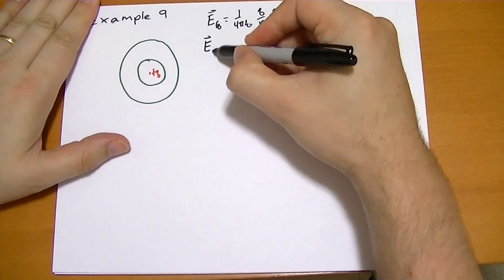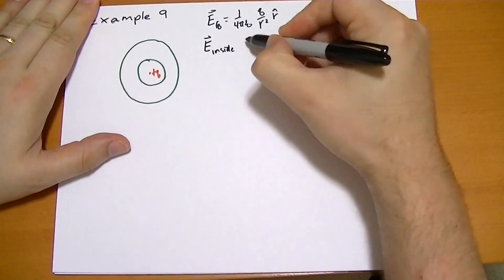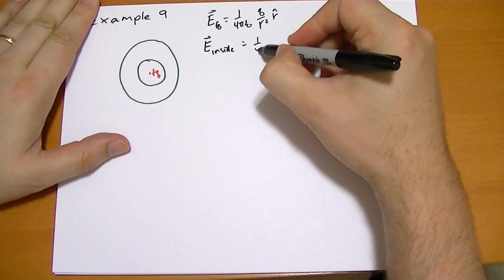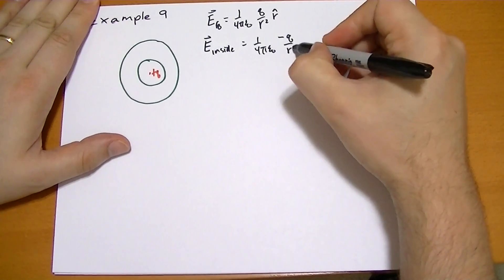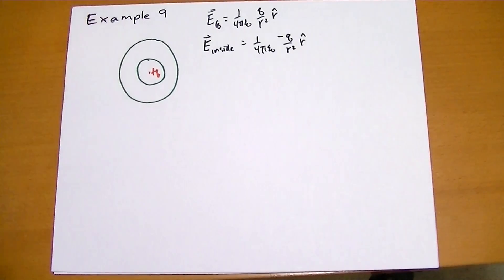So E of the inside has to equal 1 over 4 pi epsilon naught, and cancel it out with minus Q over R squared R hat. So this inside shell has a charge of minus Q.